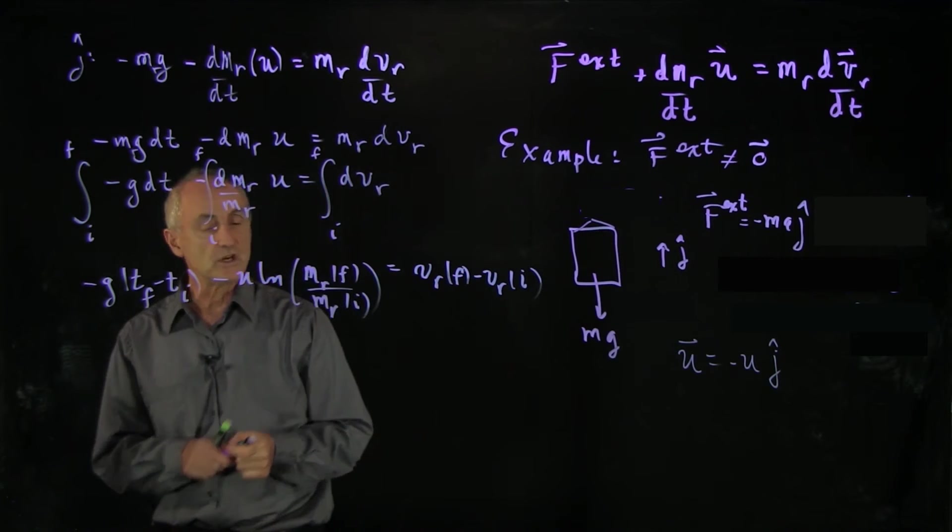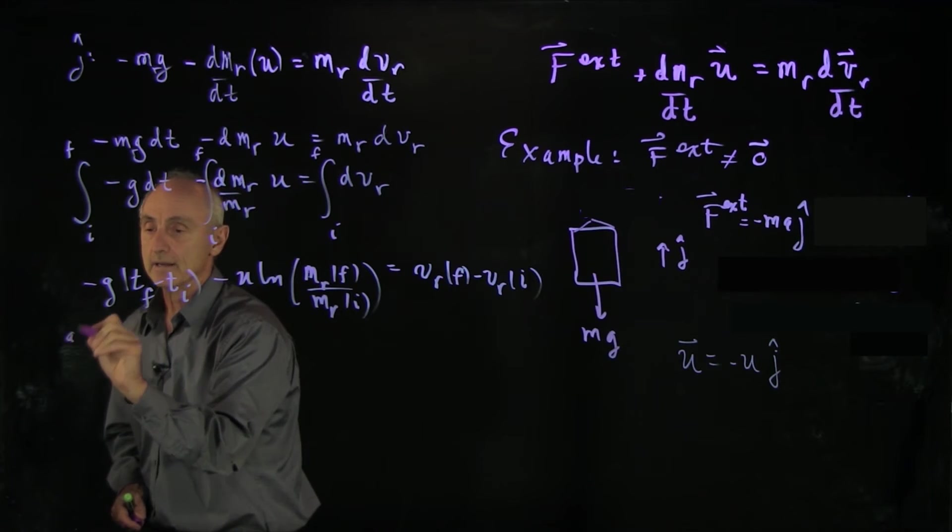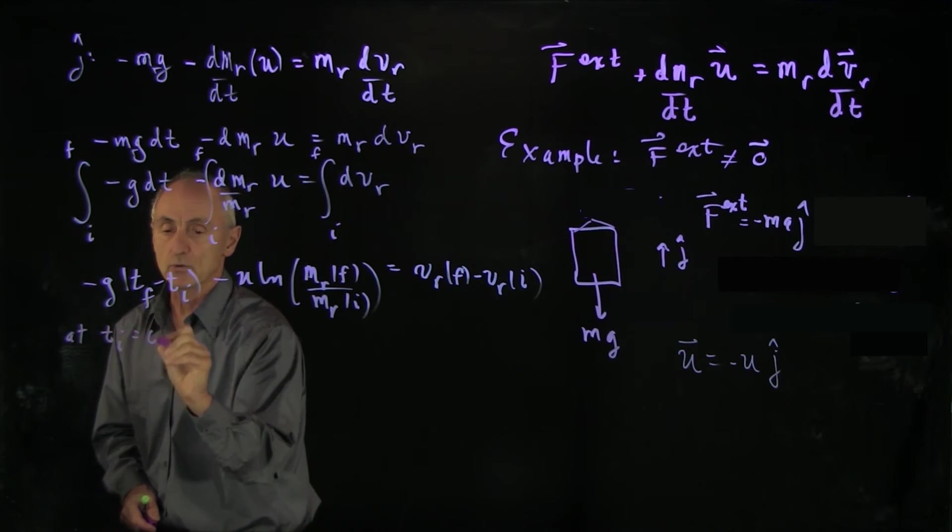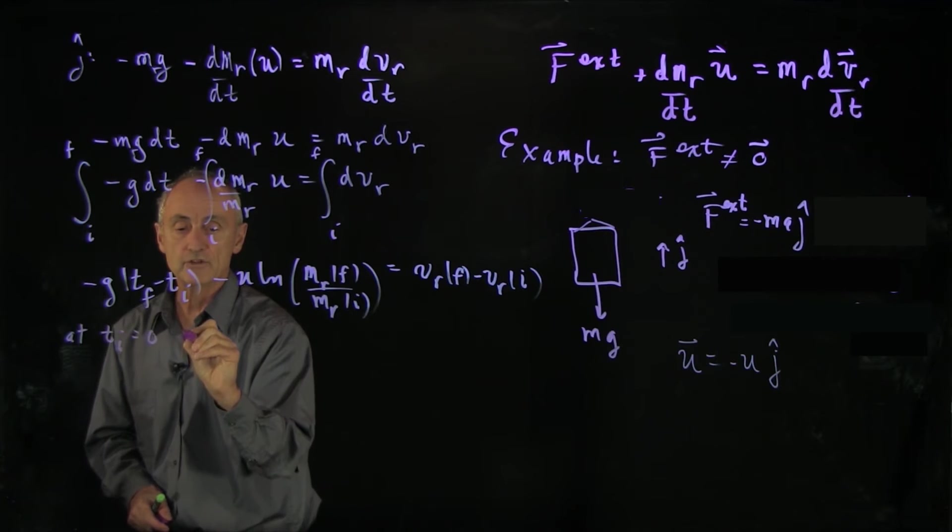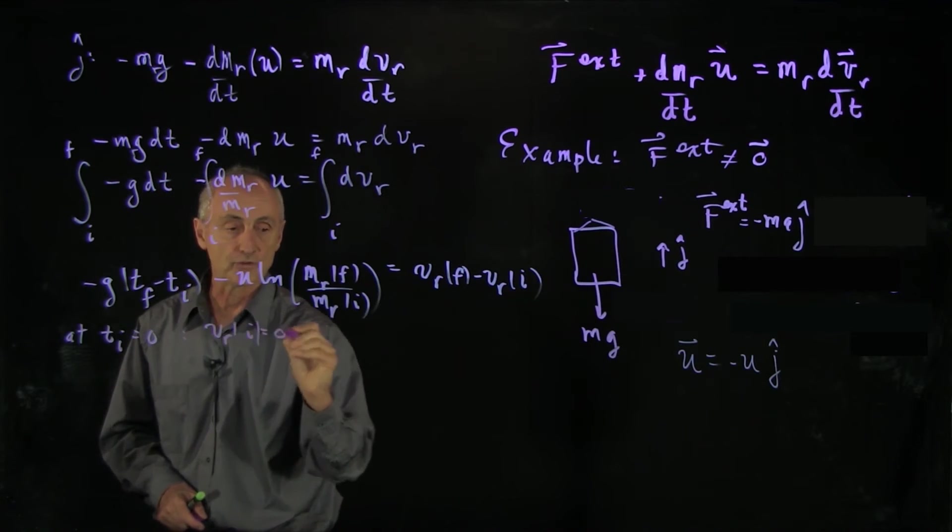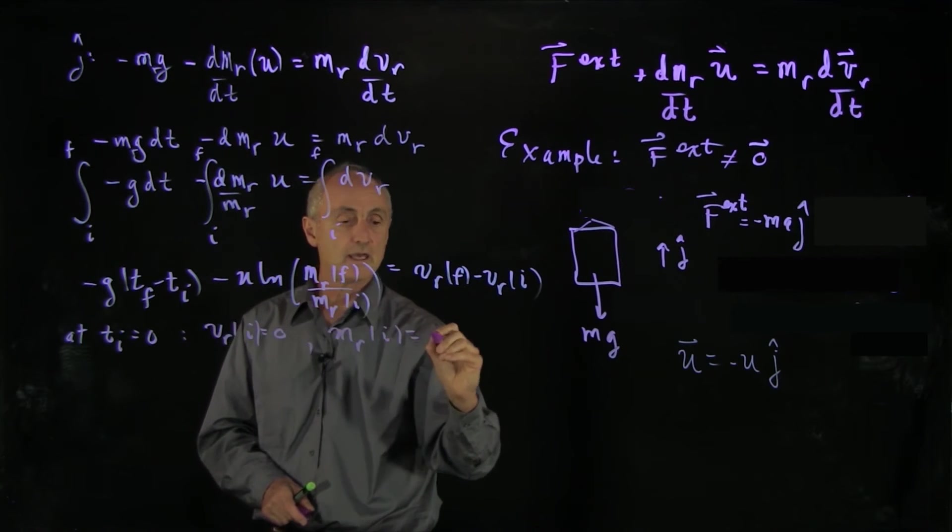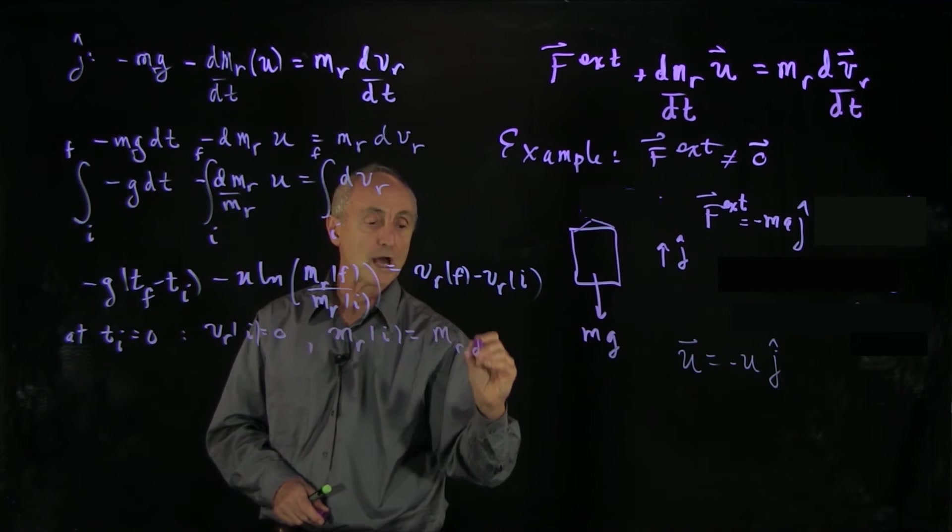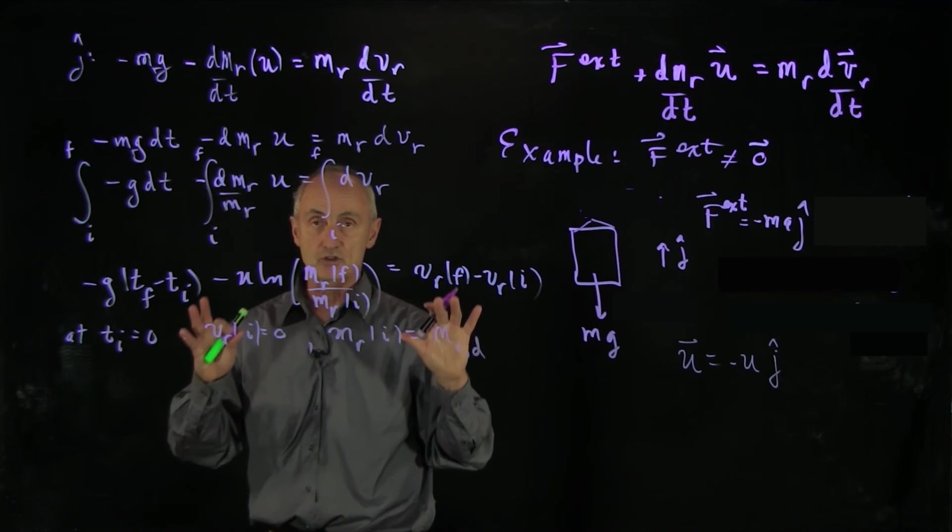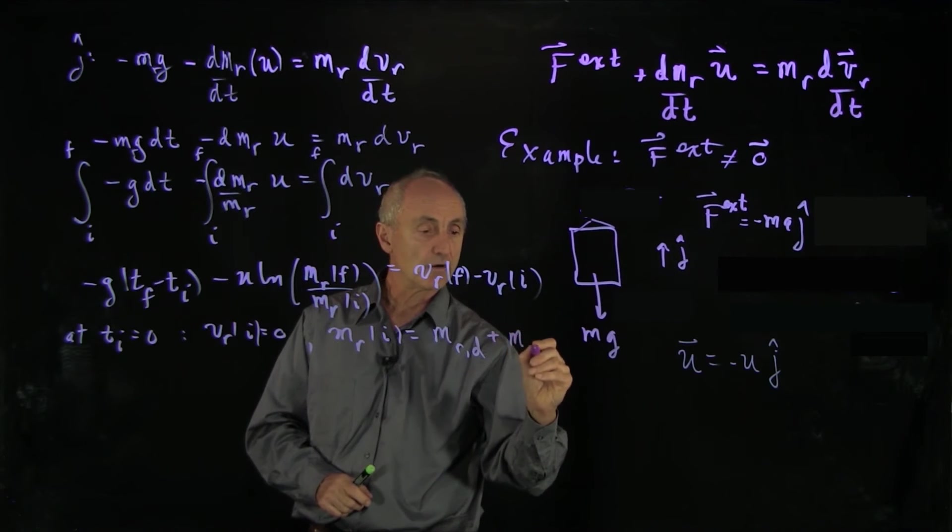Now what we notice here is let's look at some rocket taking off. So suppose that at t initial equals zero, we have the special condition that vr initial equals zero. And mr initial equals the mass of the rocket, dry mass. That's all that's not counting the fuel plus the total mass of the fuel.